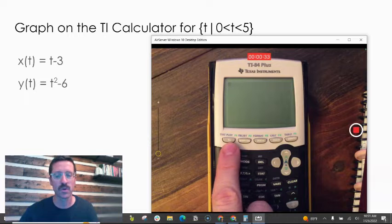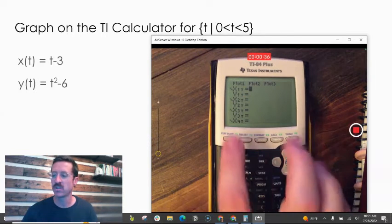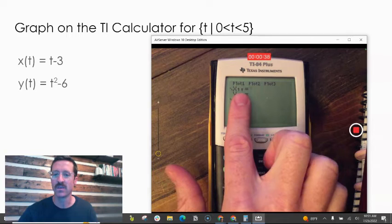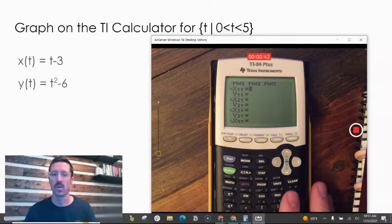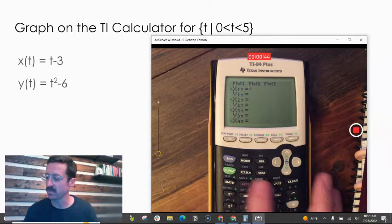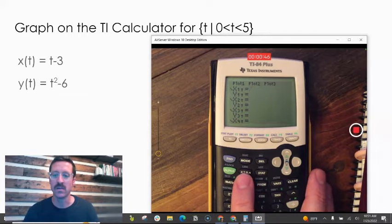Now when I go to y-equals where we graph our normal equations, you're going to see that it doesn't just say y equals—it says x(t) and y(t). I'm going to type in my x equation into the x spot. Now you might be saying, how do I do the t?